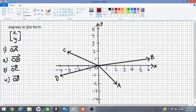Let's express each position vector in the form xy. It is a column matrix. For those who have seen matrices before, this is a 2 by 1 matrix.